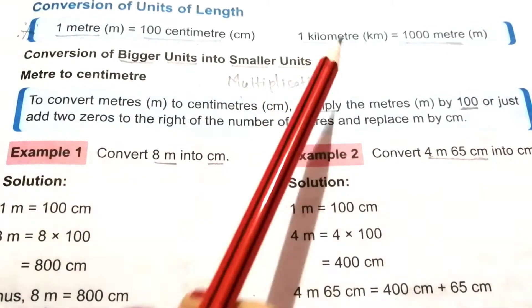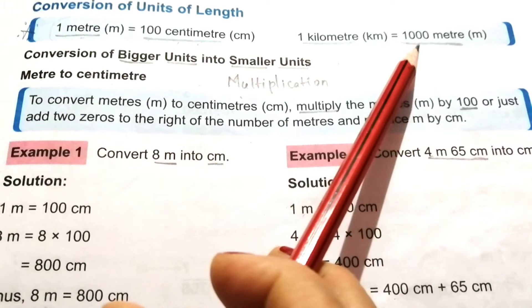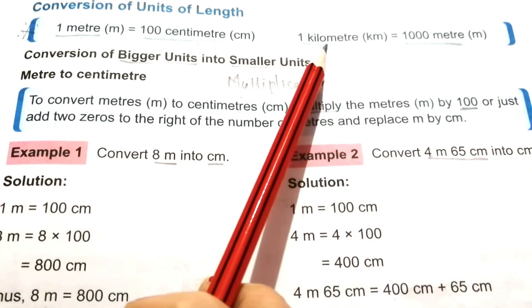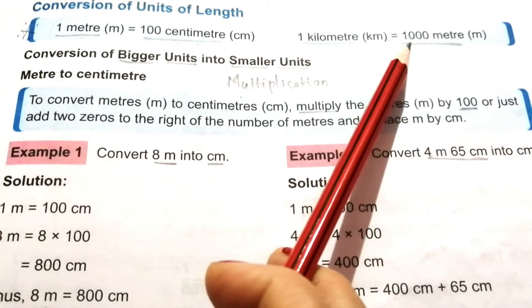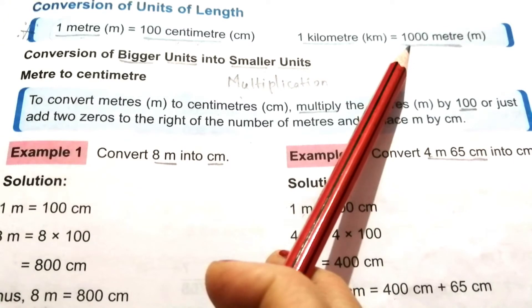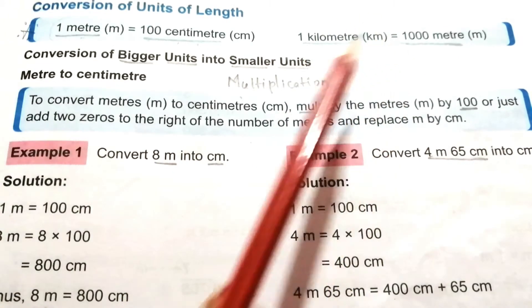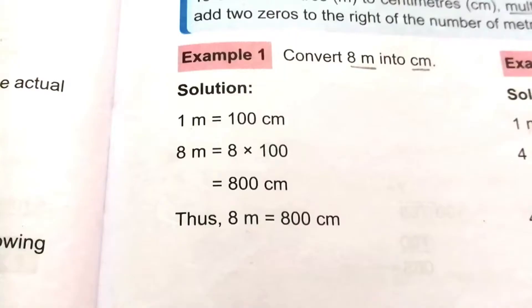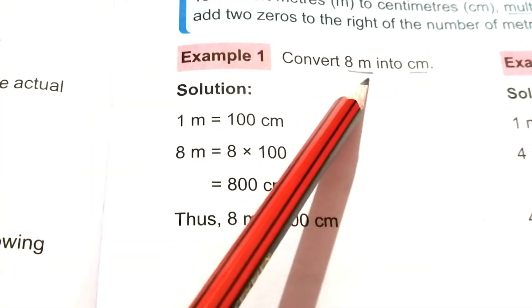Likewise, the relationship between kilometer and meter is 1000, so to convert kilometers into meters we have to multiply the kilometers by 1000.